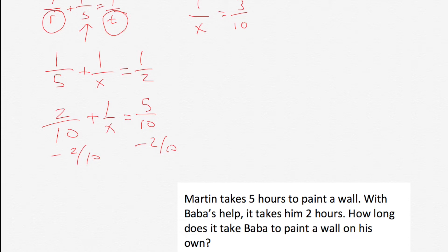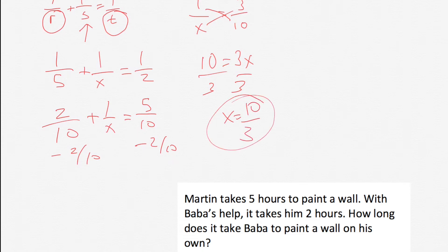So we have one over X equals three over ten. Really quick — whenever you have something like this, X is going to be ten over three; it's just the inverse. But let's do it the long way. We cross-multiply: one times ten is ten, X times three is three X. Then we divide each side by three, so we get X equals ten-thirds. So if Baba was doing it alone, it would take him ten-thirds hours, or three and one-third.